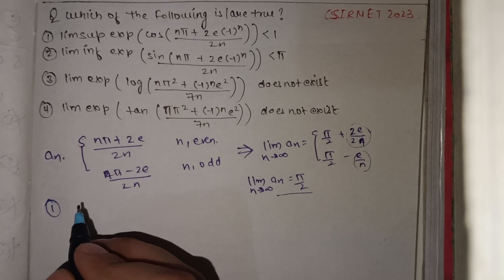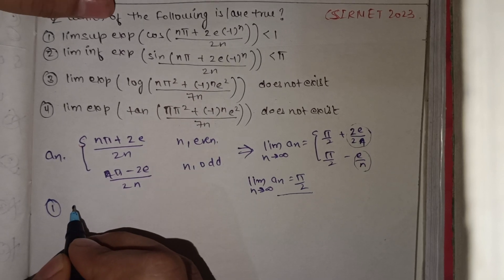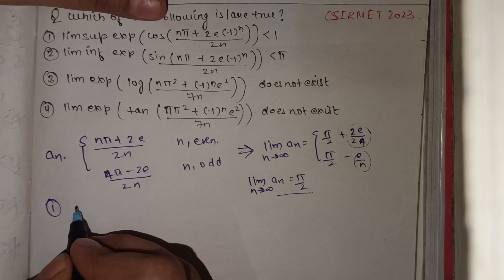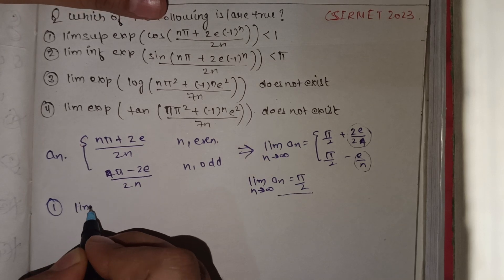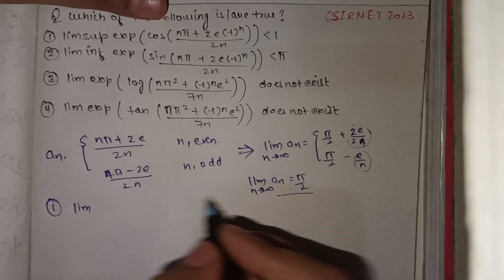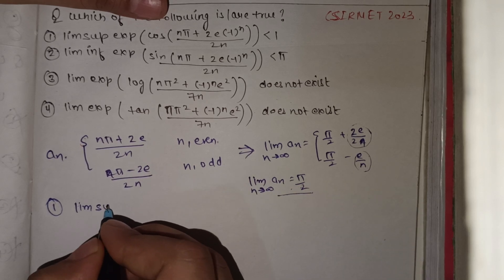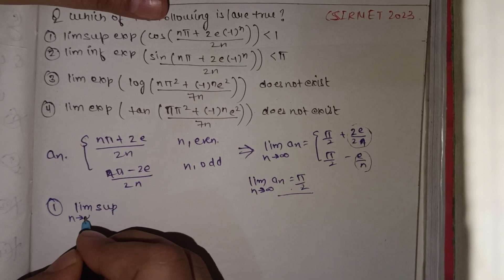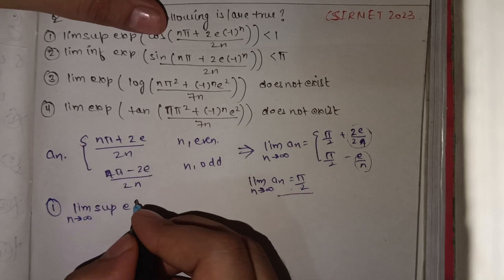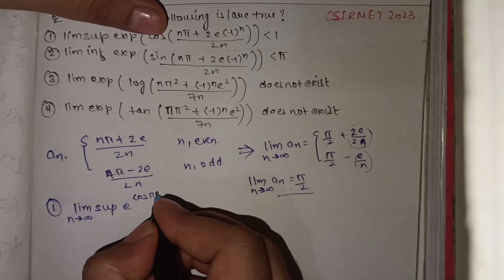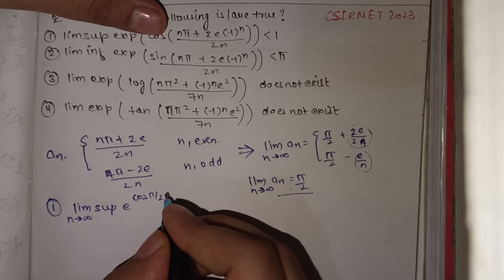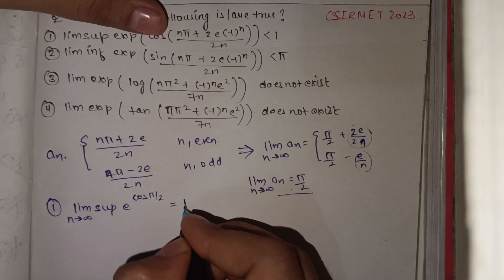Now we apply this to option 1. The limit supremum of e^(cos(a_n)): since the limit supremum and supremum are the same here, we evaluate e^(cos(π/2)). Now cos(π/2) = 0, and e^0 = 1.